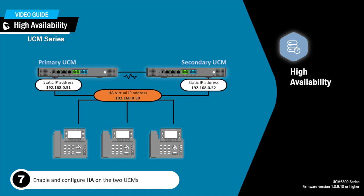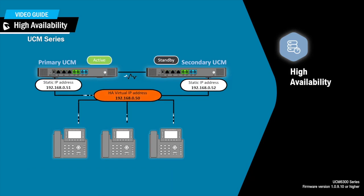Under the HA configuration page, you will be asked to assign a virtual static IP address for the HA cluster. This IP address will be shared by the primary and secondary UCM, but it will only be used by the UCM in active mode, regardless of whether it is the primary or secondary UCM. SIP endpoint devices must use the virtual IP address to register and connect to the UCM. During the HA configuration, you will also need to choose which UCM will be the primary and which will be the secondary.